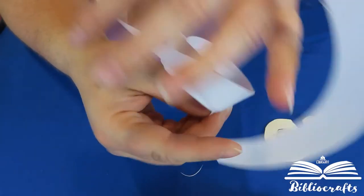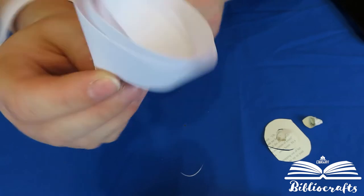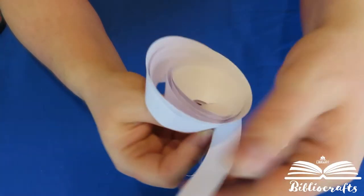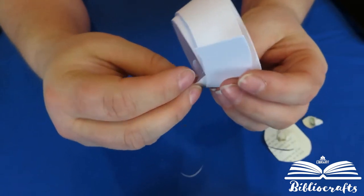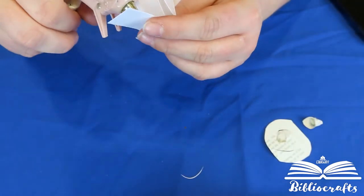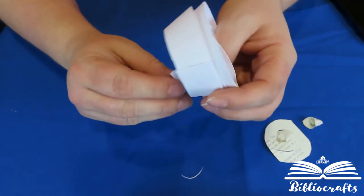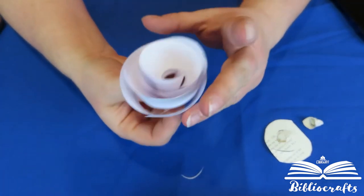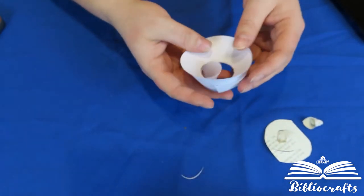All right, you can make it real tight if you want, you can do it a little bit looser. Once you get it wrapped around you'll glue the tail and glue it down and so that'll be your rose.